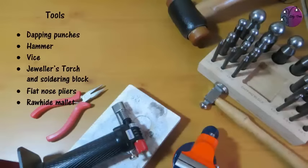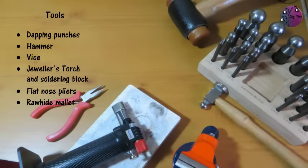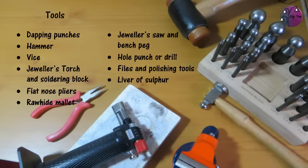And the tools I'm using are dapping punches, a hammer, a vice, a jeweller's torch and soldering block, some flat-nosed pliers, a rawhide mallet, a jeweller's saw and bench peg, a hole punch or drill, files and polishing tools and some liver of sulphur.